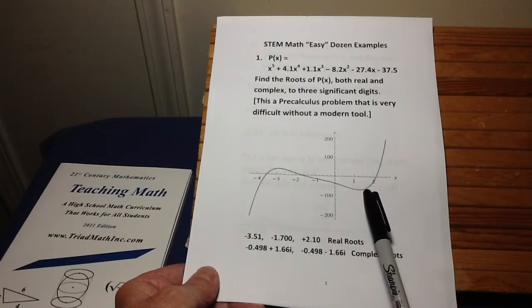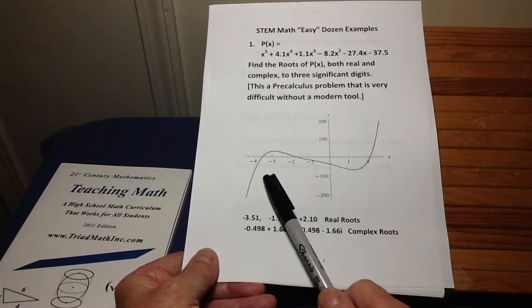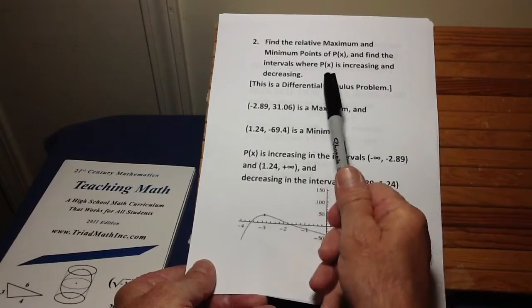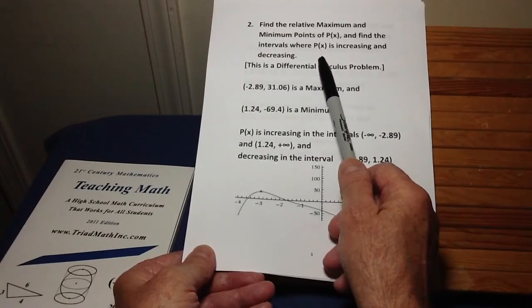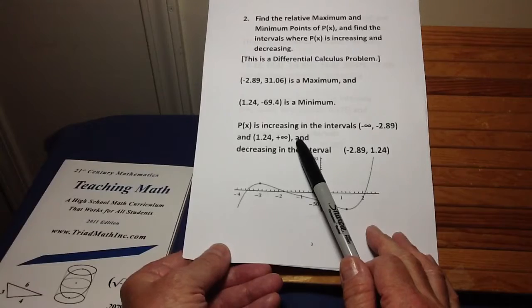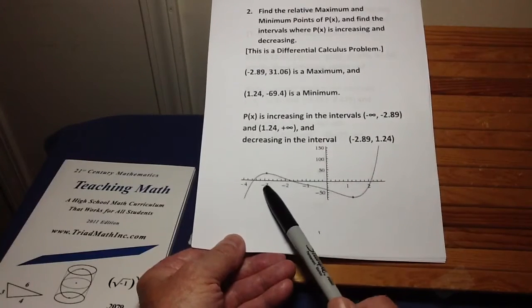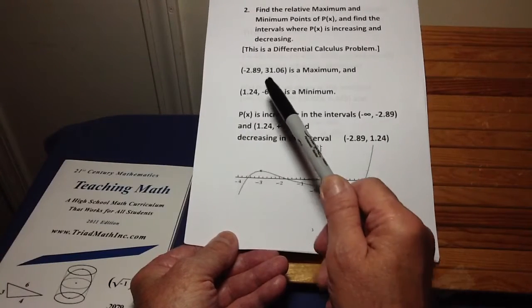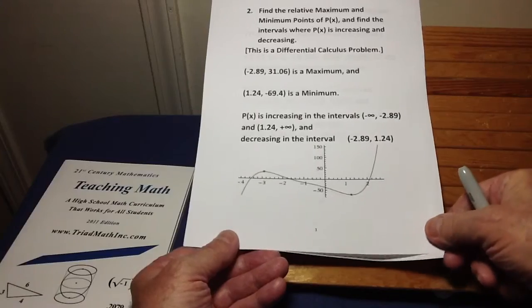What I'm showing you is going to apply to any function. I'm just using this polynomial as an example. Another thing you want to know are the maximum and the minimum. You want to know where it's increasing and decreasing. You also want to know the inflection points and where it's concave up and down. Those are all things now that you use differential calculus to solve. So the first thing we're going to ask is, what are the relative minimum and maximum points on this, and where is it increasing and decreasing? This is a tough problem. You'd have to take the derivative of it, which is a fourth-degree polynomial, find its roots, and then those would be the candidates for the maximum and minimum.